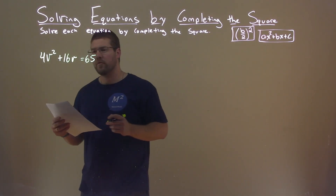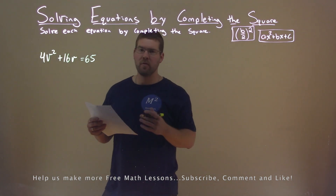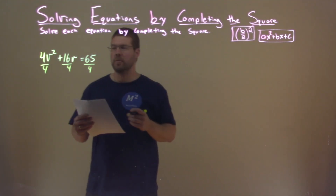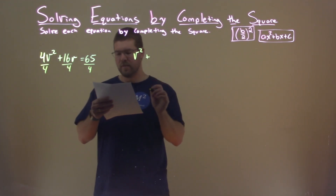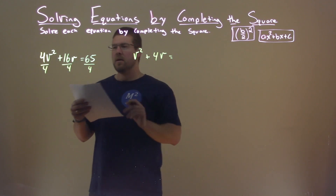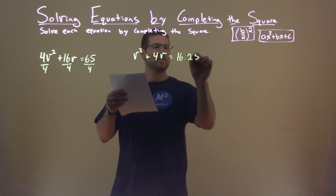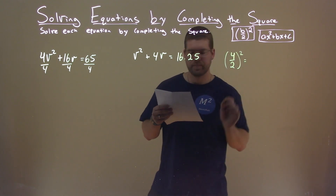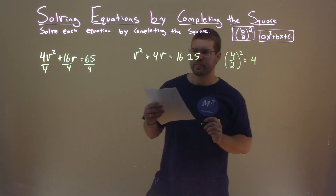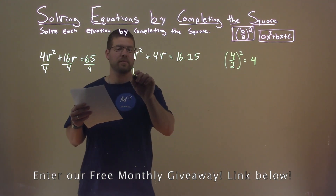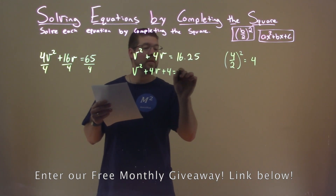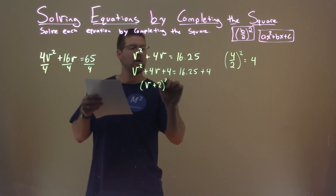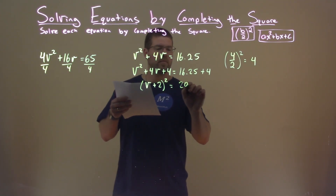We're given this problem right here: 4v squared plus 16v equals 65, and we want to solve this by completing the square. First thing we're going to do is divide all parts by 4 — I like my A value to be 1. So we have v squared plus 4v equals 16.25. Now I'm looking at my B value, 4. Dividing by 2 and squaring it comes out to be 4. So I'm going to add 4 to both sides: v squared plus 4v plus 4 equals 16.25 plus 4. The left-hand side is a perfect square — v plus 2, all squared — and 16.25 plus 4 is 20.25.